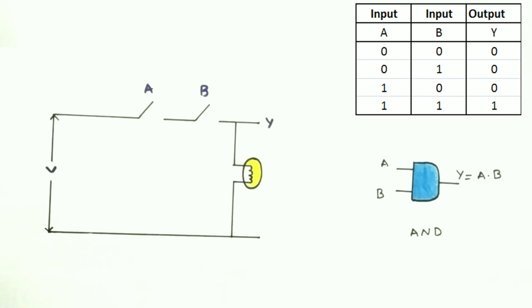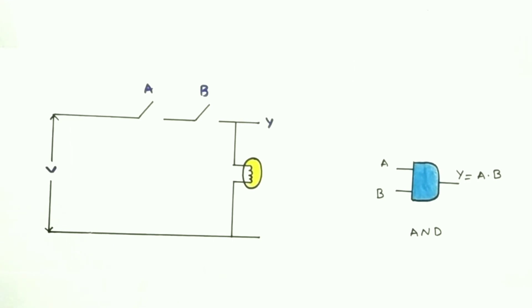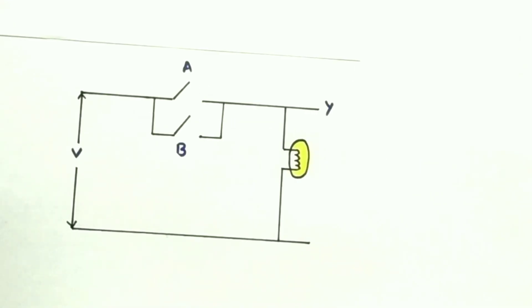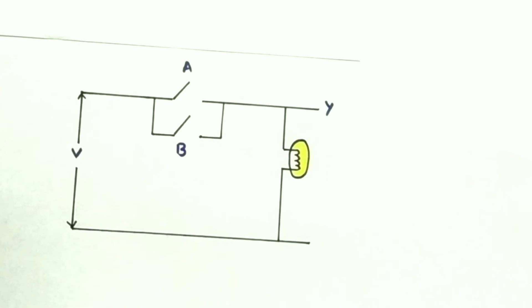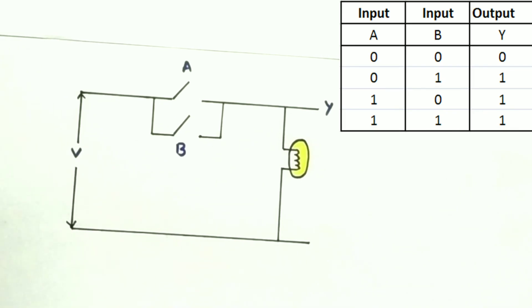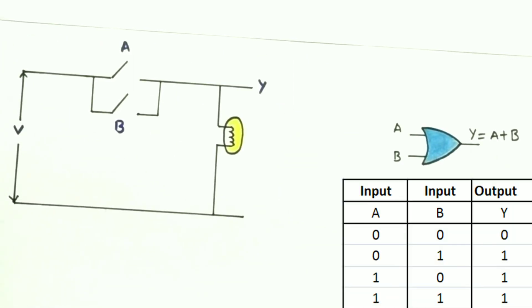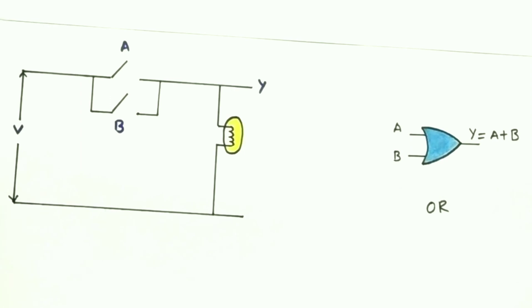Now let's connect the switches in parallel and see the logic. The bulb will glow when A is closed, when B is closed, or when both are closed. Only when both are open will the bulb not glow. This scenario is similar to OR logic, so Y = A + B.